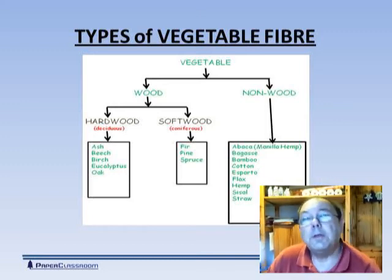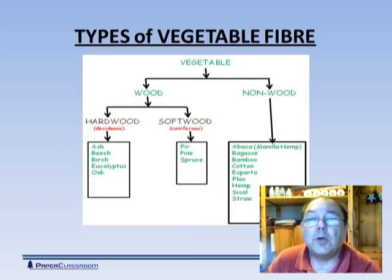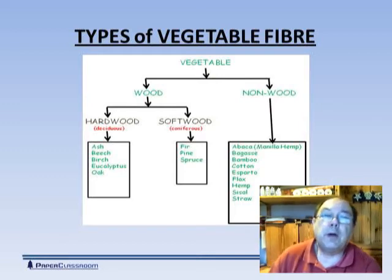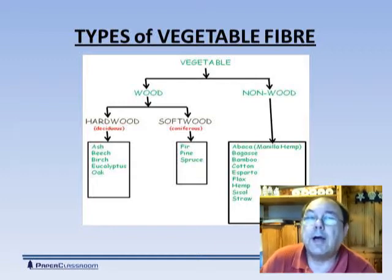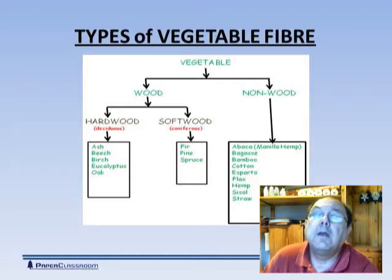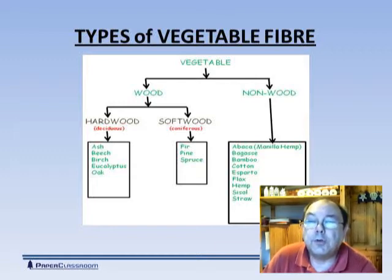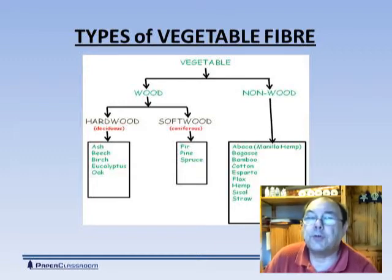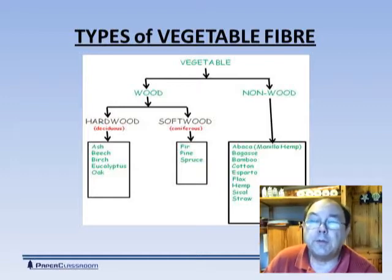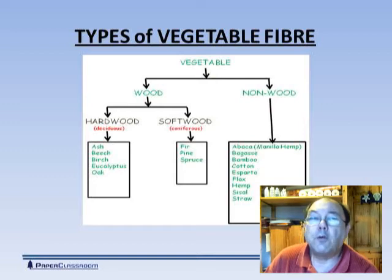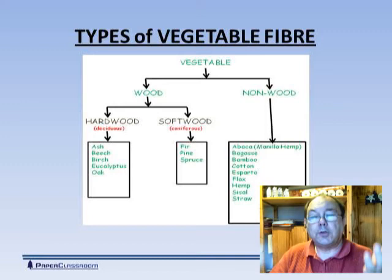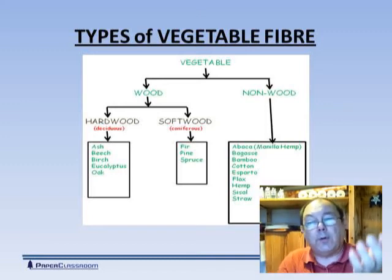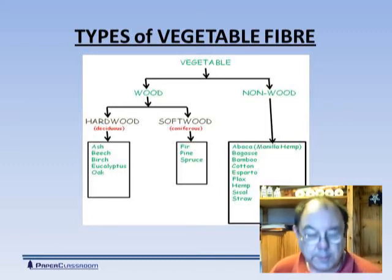Wood fibres can be divided into either hardwoods or softwoods. Softwood trees were around millions of years before hardwood trees, so hardwoods have a much more complex structure. Softwood trees produce long, wide fibres that are great for strength. Hardwood trees produce shorter fibres that are stiffer and great for appearance. So it's something the papermaker always has to balance — does he want strength, does he want appearance, where is the line?